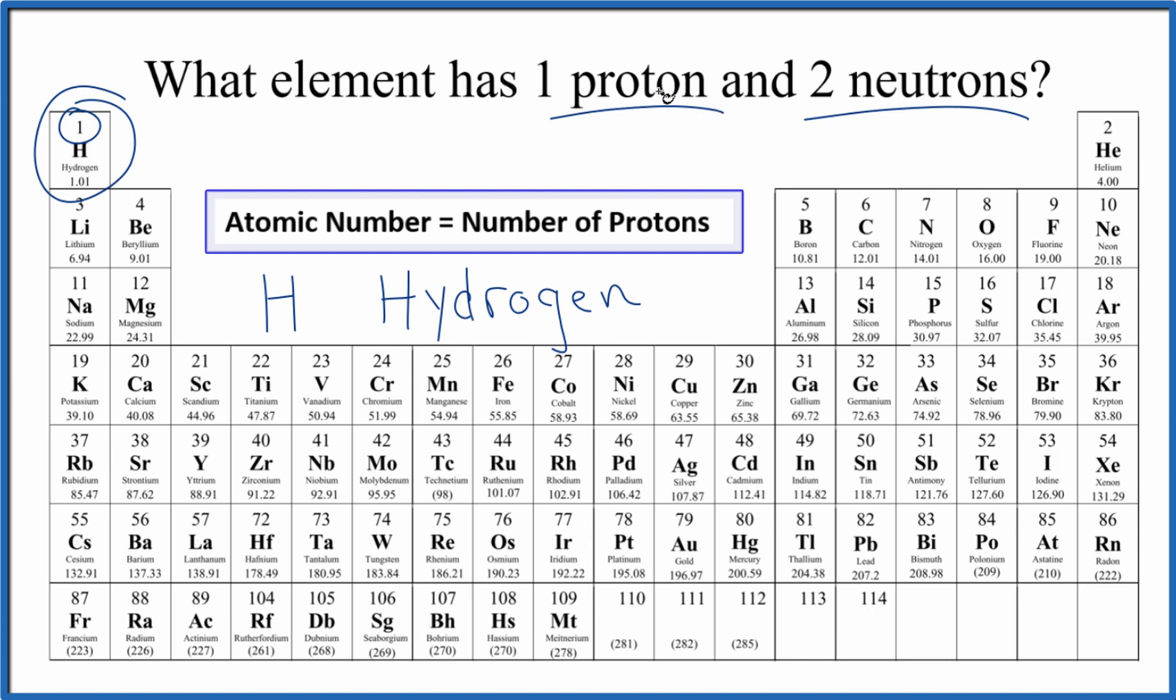Sometimes hydrogen has just one proton and no neutrons. Sometimes it has one proton and one neutron. Here, when it has one proton and two neutrons, we have one plus two, which gives us the mass number. We call this hydrogen-3. It's an isotope of hydrogen, but it's still hydrogen because it has just one proton.